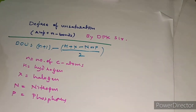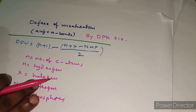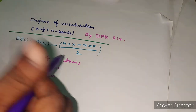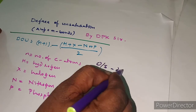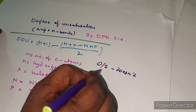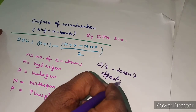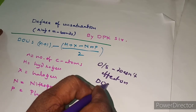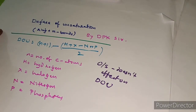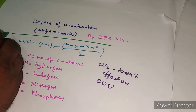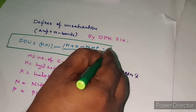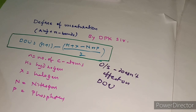In most organic compounds, oxygen will be present. However, oxygen does not affect the degree of unsaturation — remember this, it is important. Similarly, sulfur also does not affect the degree of unsaturation. The formula DOU = (n + 1 − (H + X − N)) / 2 is the simplest formula we will use.